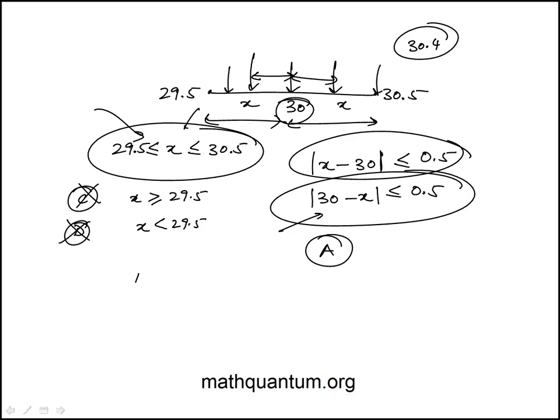And if you look at B, you would plug in |30 - 30.4|. Is that greater than 0.5? This is absolute value of -0.4, which is 0.4, is not greater than 0.5. So that's how you'd eliminate B. And then you would narrow it down to A. So to recap, the answer is A.